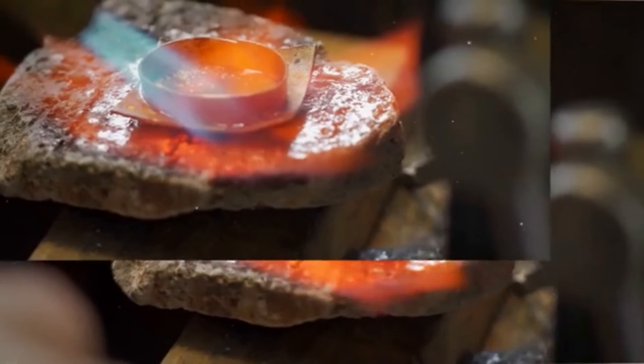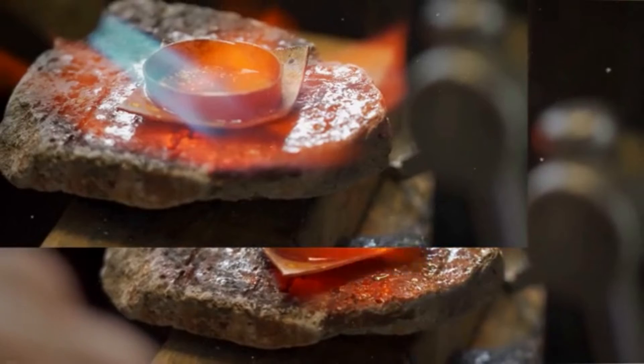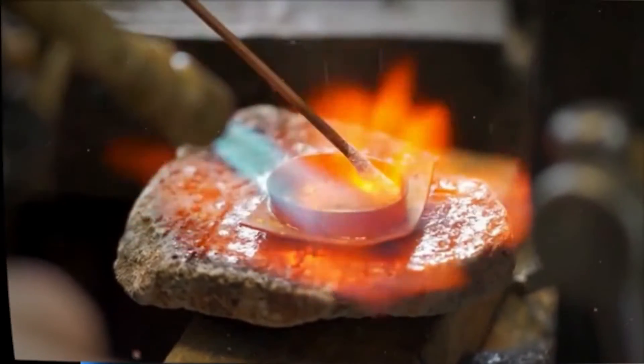A neutral oxy-acetylene flame is used for welding, brazing, and silver soldering most metals and is therefore the most common type of flame to use. A neutral flame is also used for oxy-acetylene cutting.